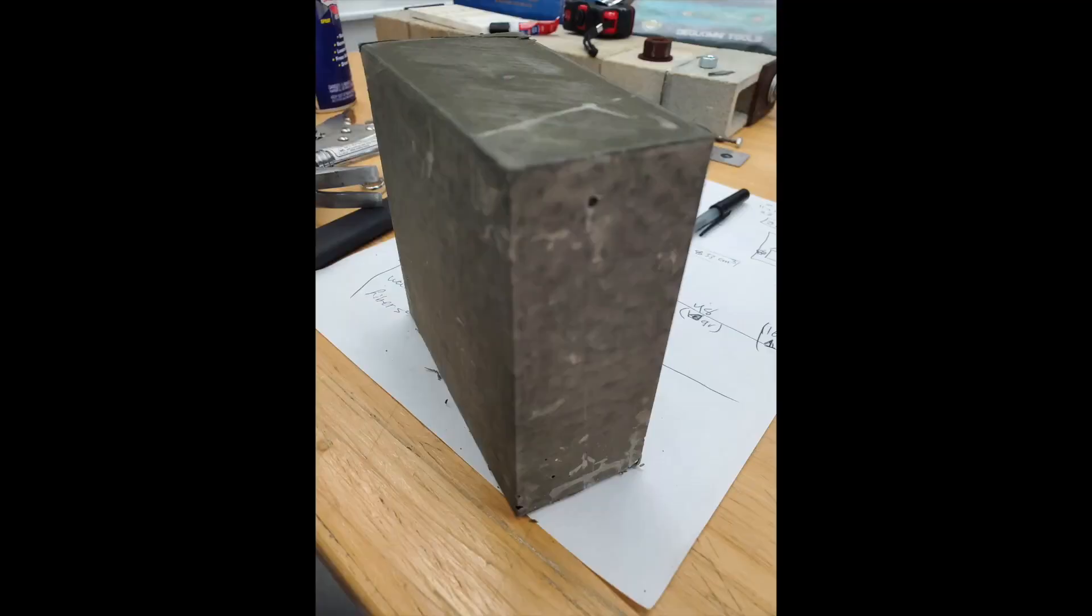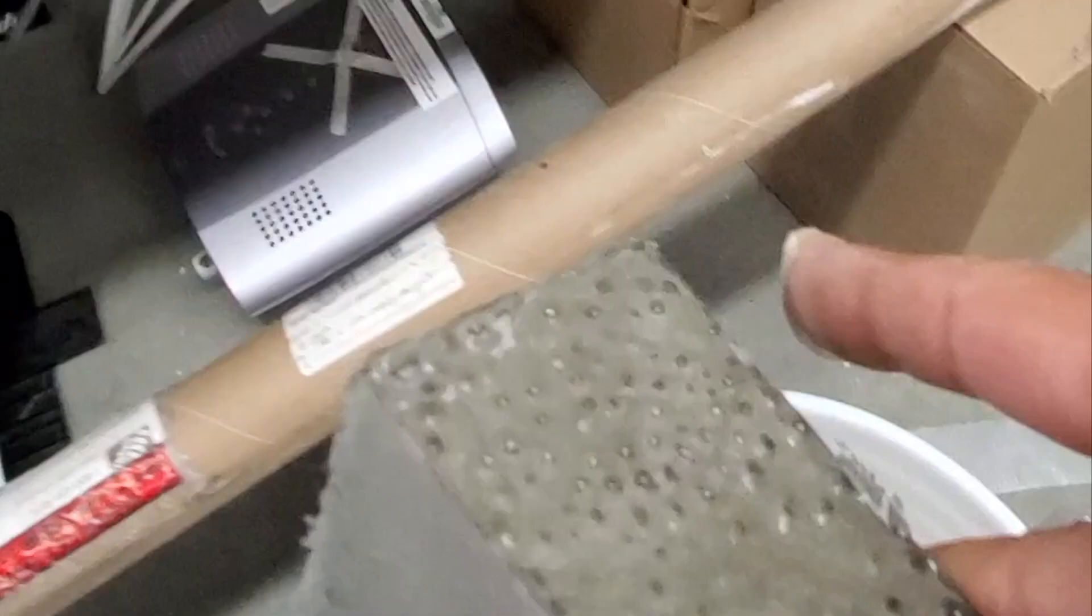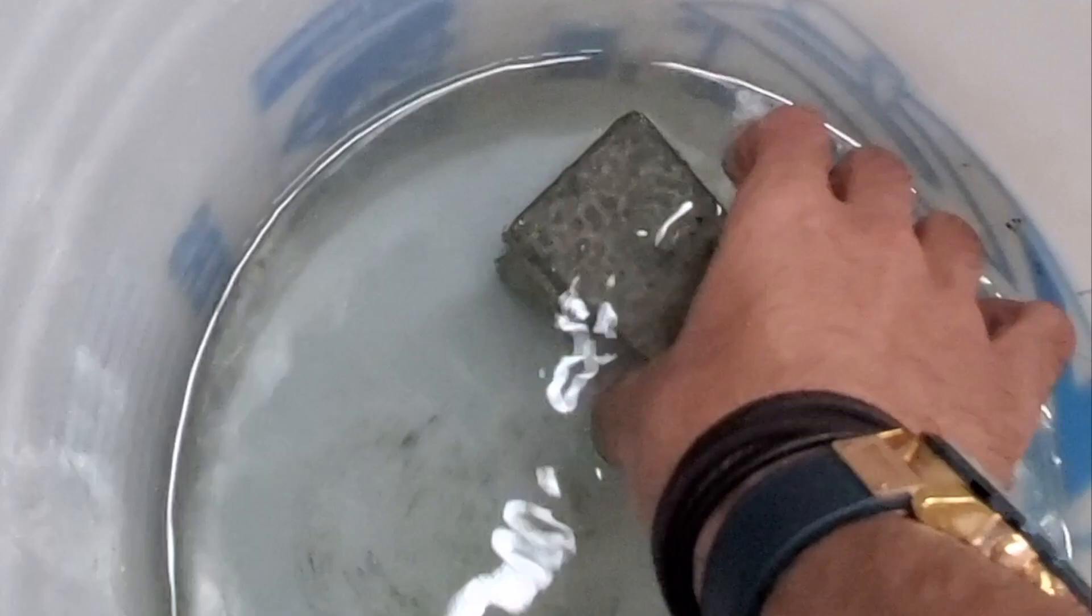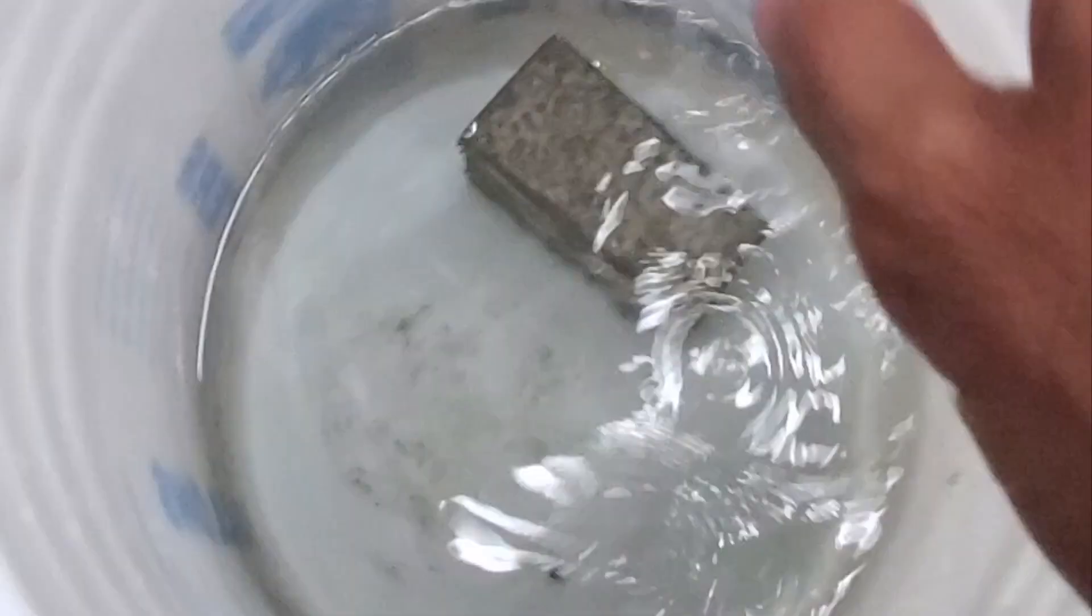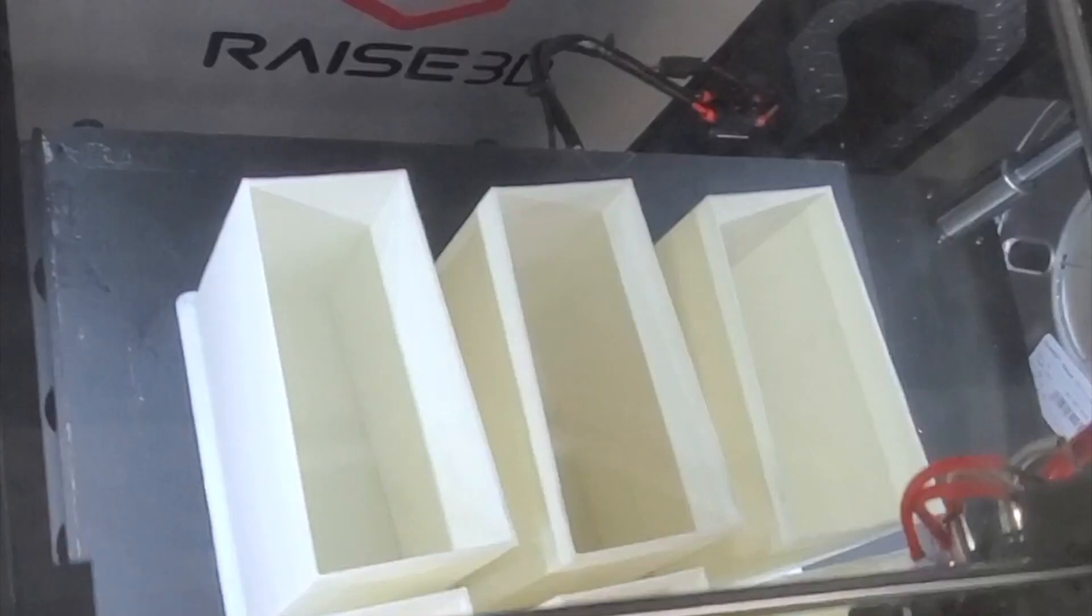Once the demolding process was complete, vossoirs were placed into a bucket of water to further strengthen them. A total of 31 bricks needed to be created for this project, so this process was repeated multiple times.